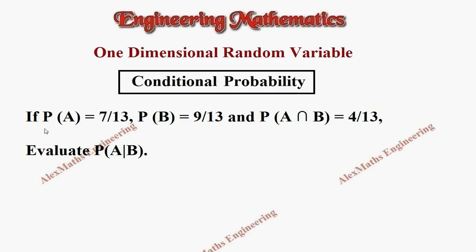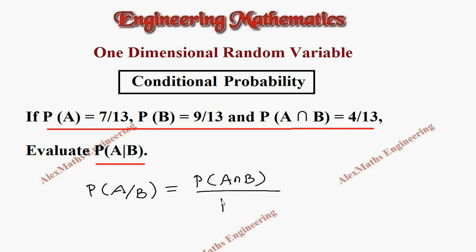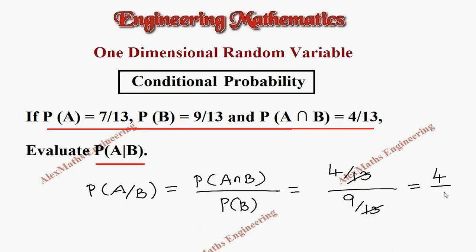In this question, they have given P of A, P of B, and P of A intersection B. They want P of A given B. By formula, P of A given B is P of A intersection B divided by P of B. The values are 4 by 13 divided by 9 by 13. After simplification, we get 4 by 9.